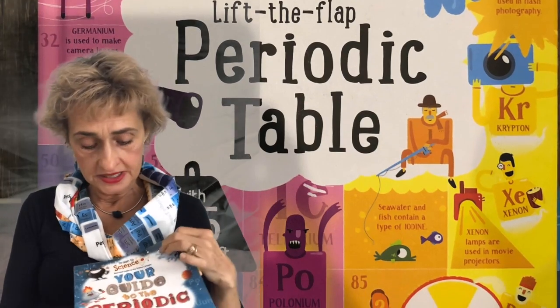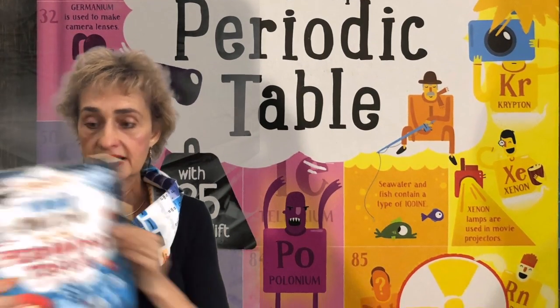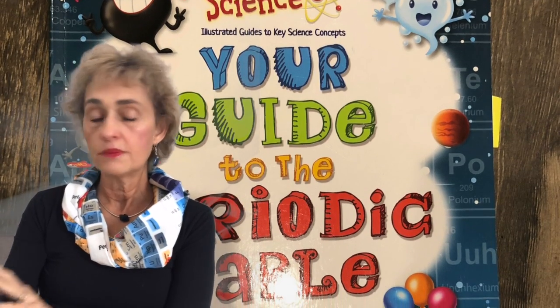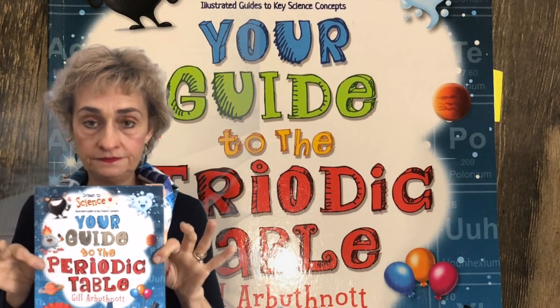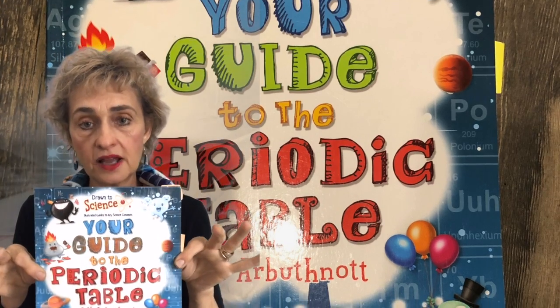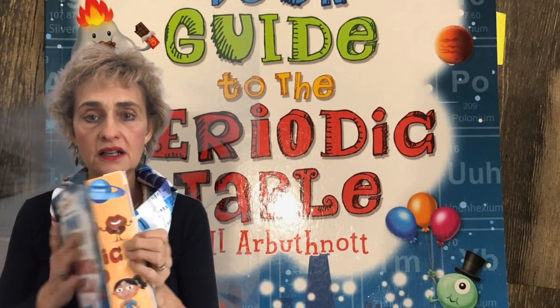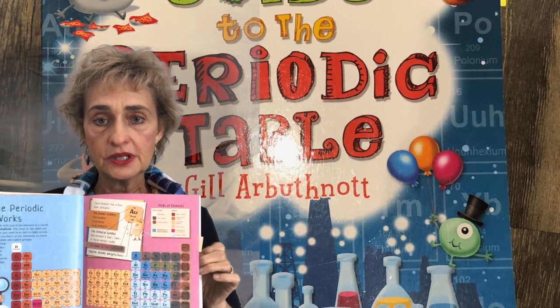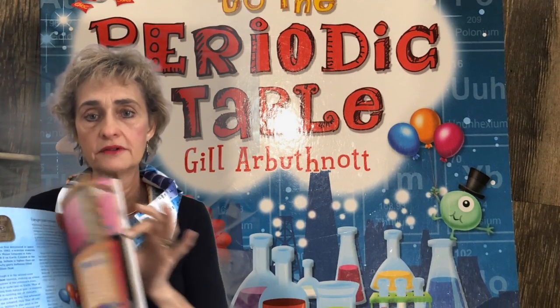I also recommend this book. It's called Your Guide to the Periodic Table by Gil Arbuthnot. And you might be able to get this out of the library, but even for older kids, there's so much to learn from this book. So I really liked it.